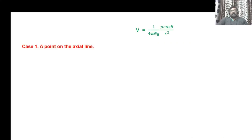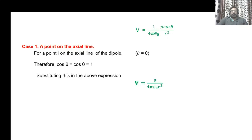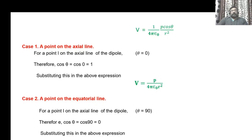There are two special cases involving the axial line and the equatorial line of a dipole. For a point on the axial line, theta equals zero, so cos theta equals cos 0 equals 1. The potential becomes V equal to P divided by 4π epsilon-naught R squared. For a point on the equatorial line, theta equals 90 degrees, and cos 90 equals 0. Therefore, the potential at any point on the equatorial line is zero. This is an important result.